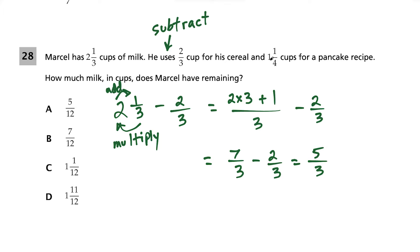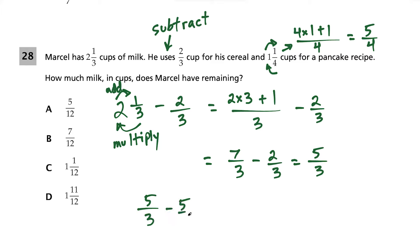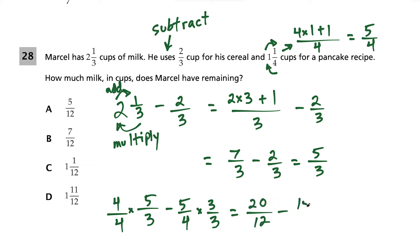Now subtract 1 and 1/4, converting it to 5/4. To subtract 5/3 − 5/4, find common denominators by multiplying the first fraction by 4/4 and the second by 3/3. We get 20/12 − 15/12 = 5/12. This matches choice A.